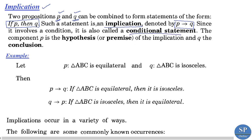This implication is also called a conditional statement, because it involves a condition: if p then only q. In the implication p implies q, p is called the hypothesis or premise, and q is called the conclusion.